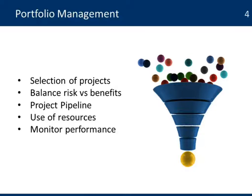One important element in portfolio management is the selection of projects — the process in which there is a proposal, a concept paper, and a process to identify. Even proposals coming from donors need to be evaluated and selected to make sure that, out of all those ideas or proposals coming in, the organization is selecting the best project. There needs to be a balance between risk and benefits. The project pipeline covers all of those ideas coming in and how they are integrated so the organization can make the best use of its limited resources.